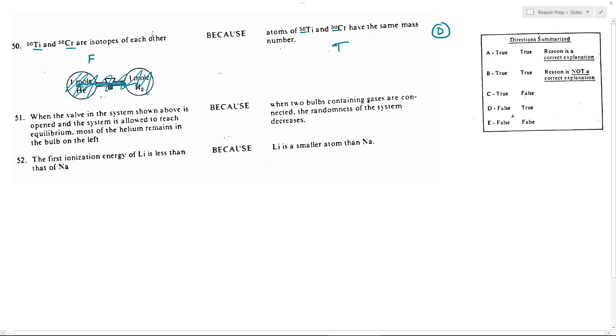So you'll have just as much helium on the left as you will on the right when everything gets to equilibrium, when everything diffuses and everything is homogeneously distributed. So that is false.